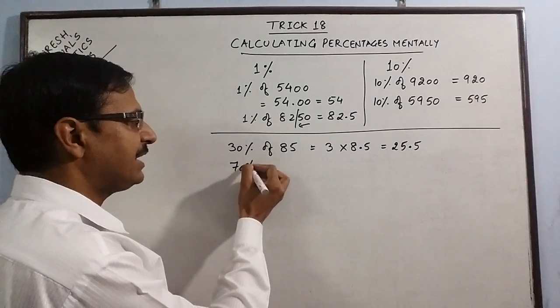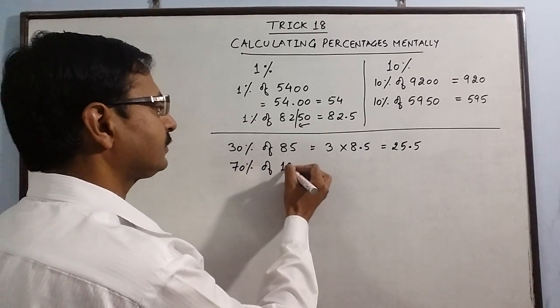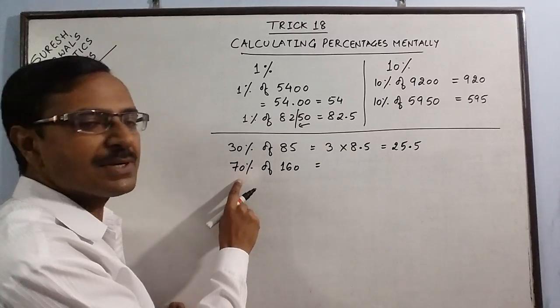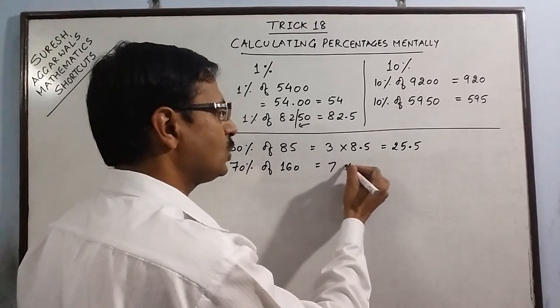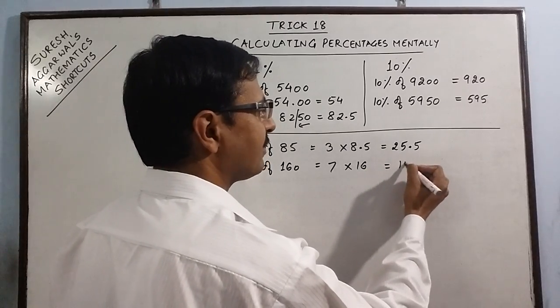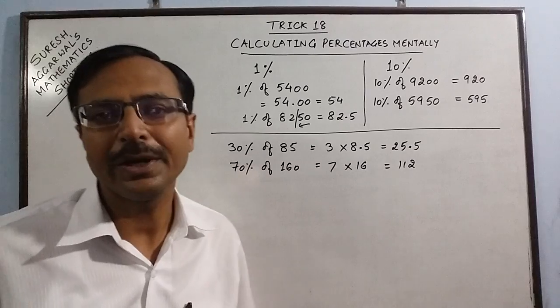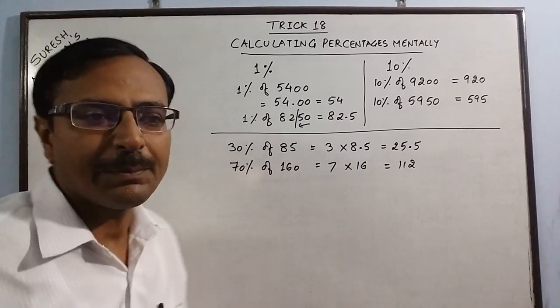One more example. Say you have 70% of a particular quantity, say 160. Now visualize 70% as 7 into 10%. So 7 into 10% of this is 16. So 16 into 7 is 112. This is how we calculate percentages of round figures.